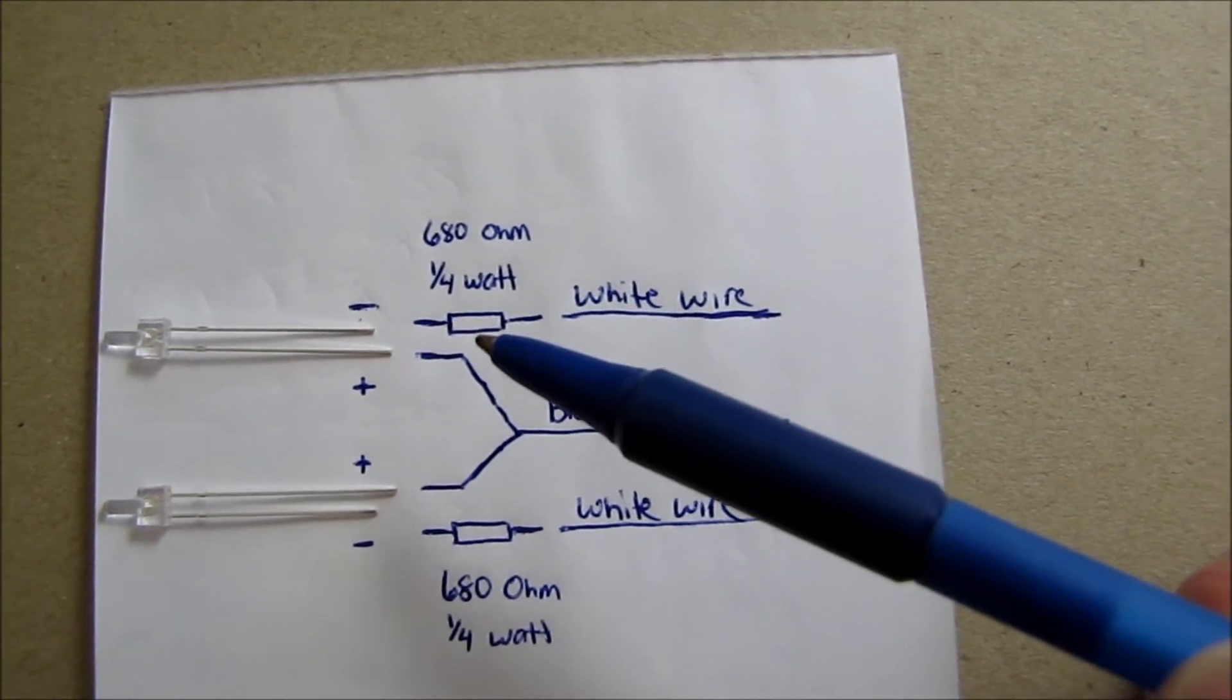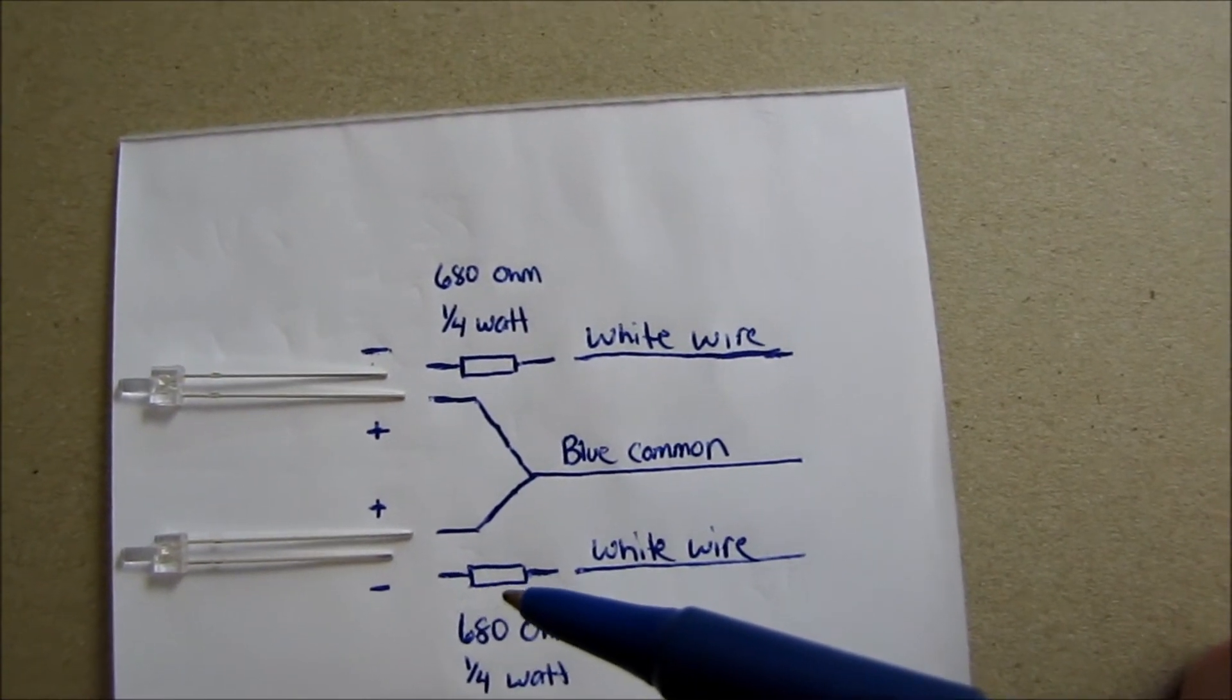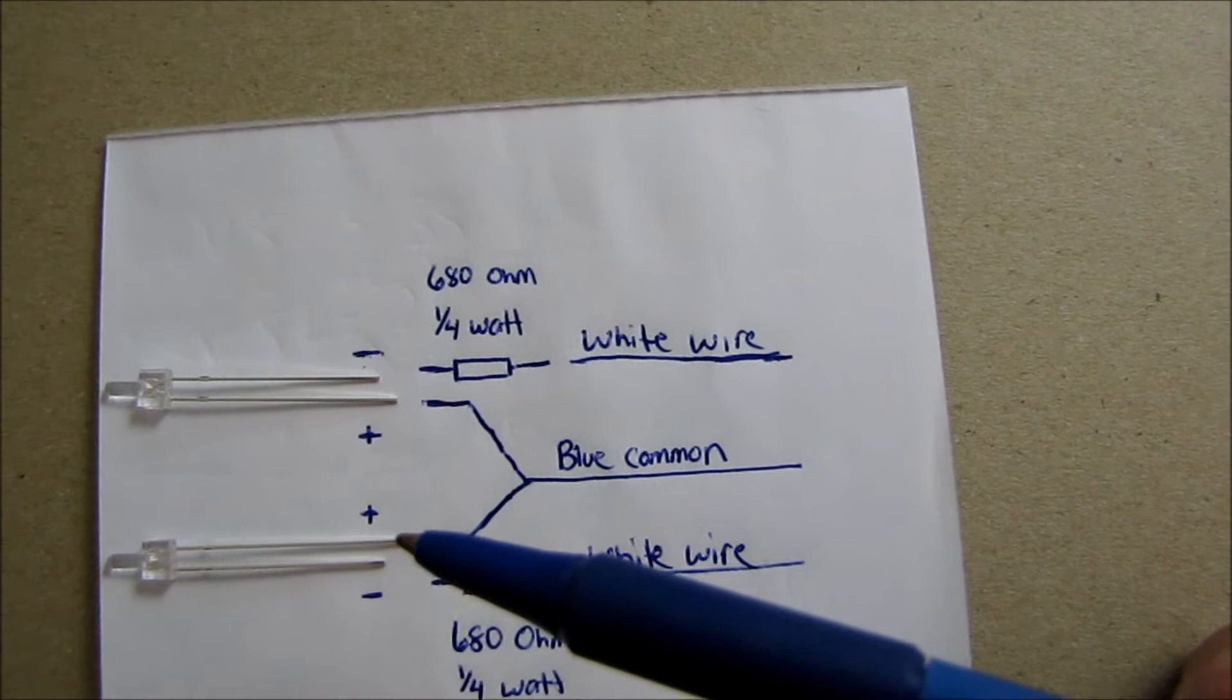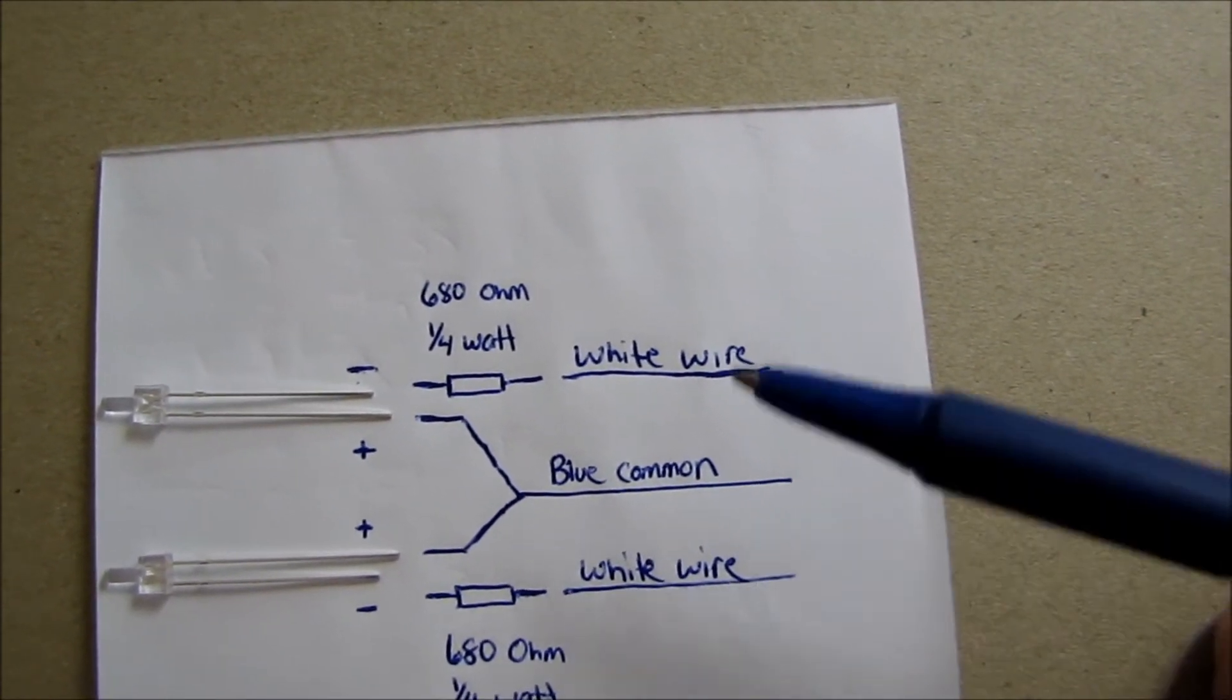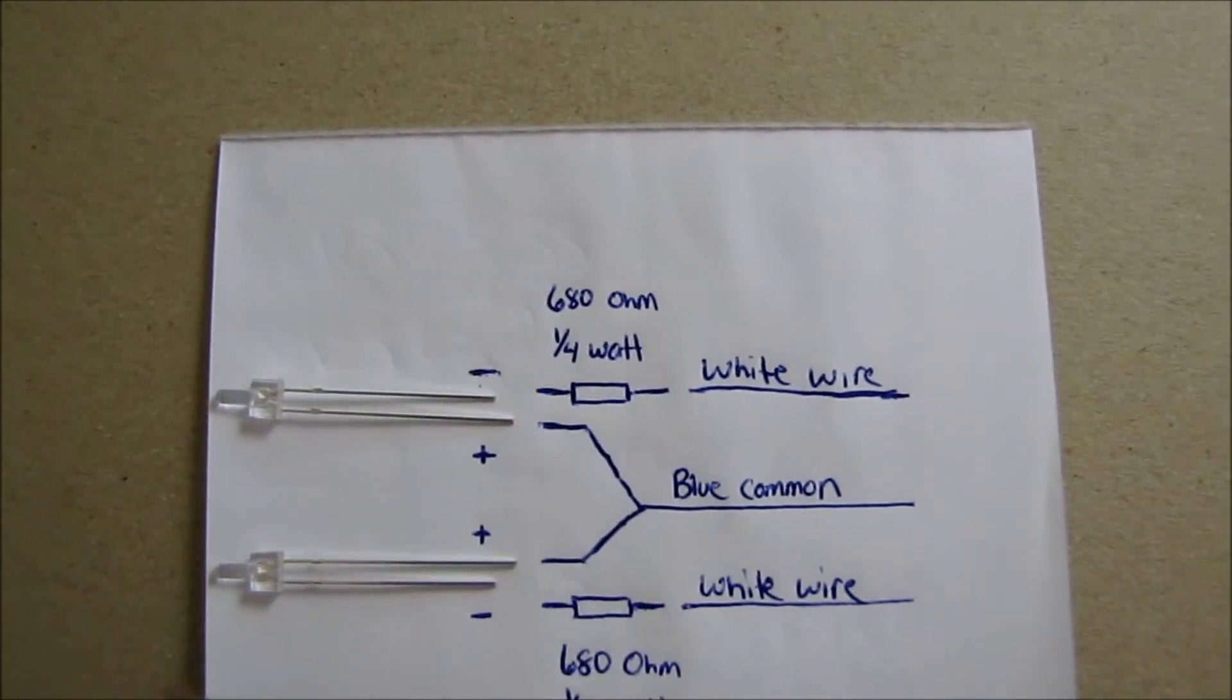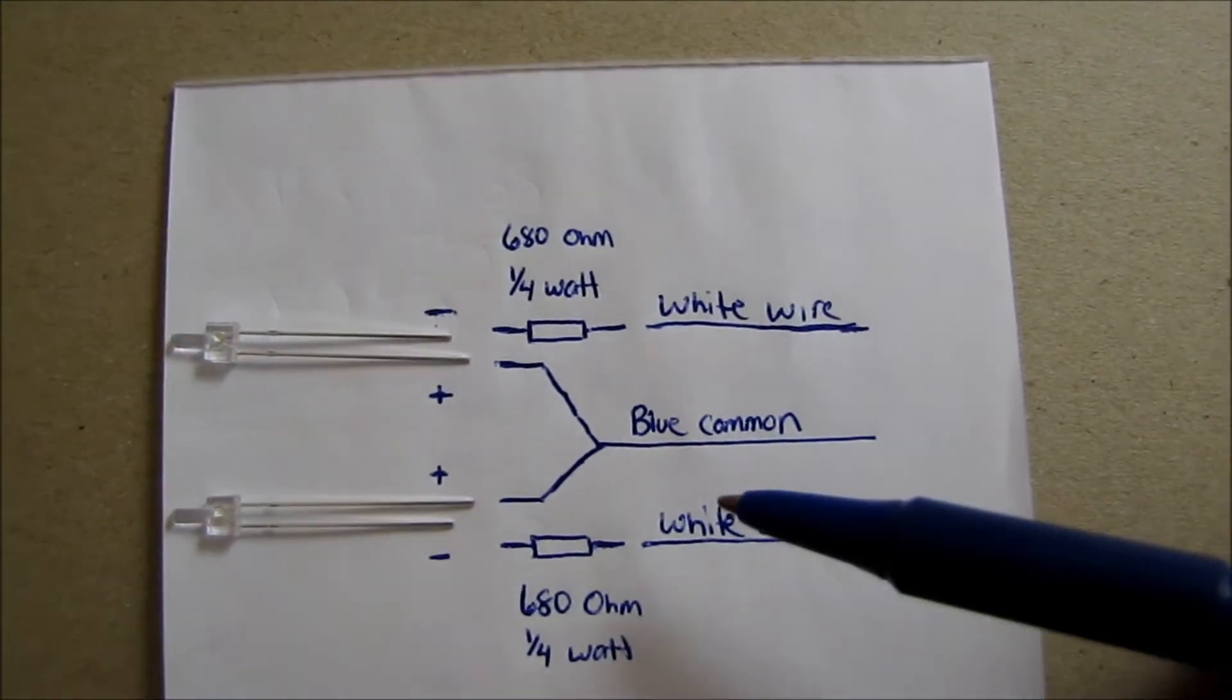Off the negatives we're running our 680 ohm quarter watt resistor, and then onto that we put the white wire. Same with the other one. We're going to be connecting both positives together for your blue common. I'm using both lights off the one white wire so when turning it on, they'll both come on.